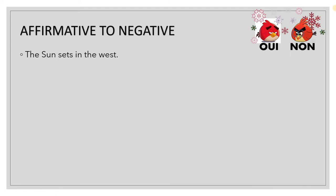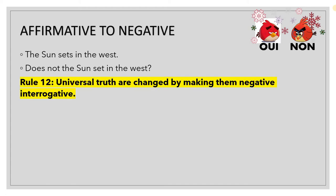Next rule: 'The sun sets in the west' is a fact. It becomes 'Does not the sun set in the west?' Universal truths are changed by making them negative interrogative. This is the 12th rule in affirmative to negative, which very few people generally use. Universal truth is always put into negative interrogative because there can be no replacement for it.